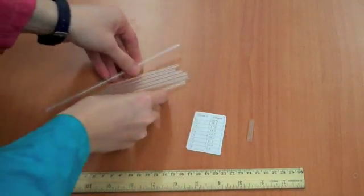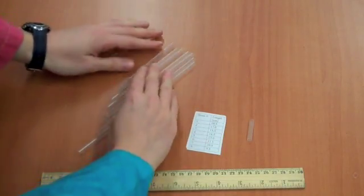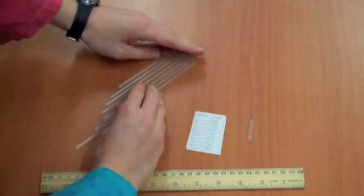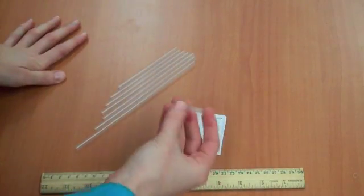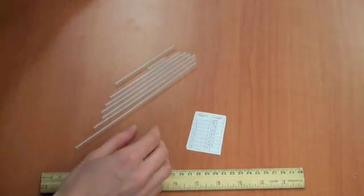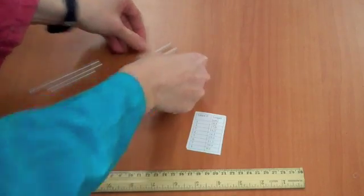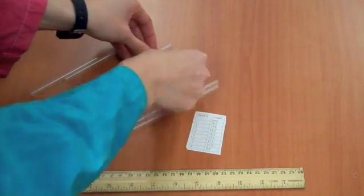Then put them in line, and order from shortest to longest, like that. Then, you can use the little snippets in between to act as spacers, so that it's easier to blow across the straws when you're playing your music.